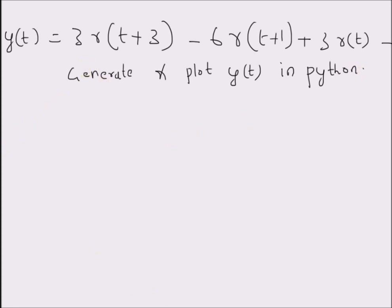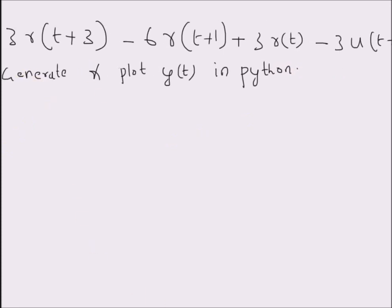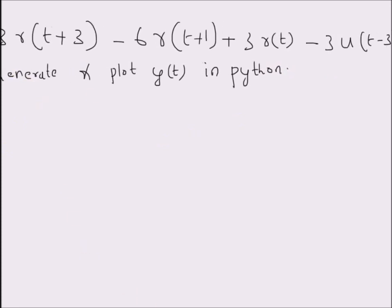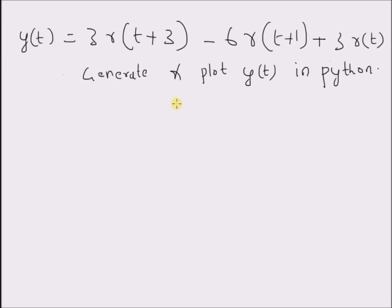First, we have to identify the basic components of this signal. We can clearly see that there are four components, and the first three are basically variations of the ramp signal. Let us call them y1, y2, y3, and y4.